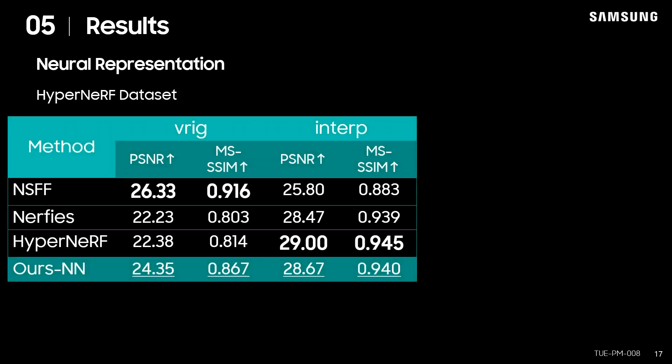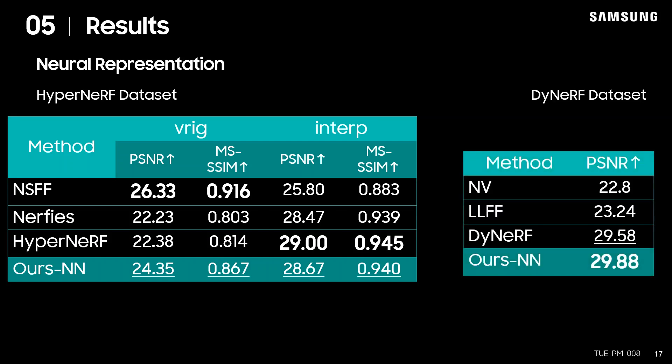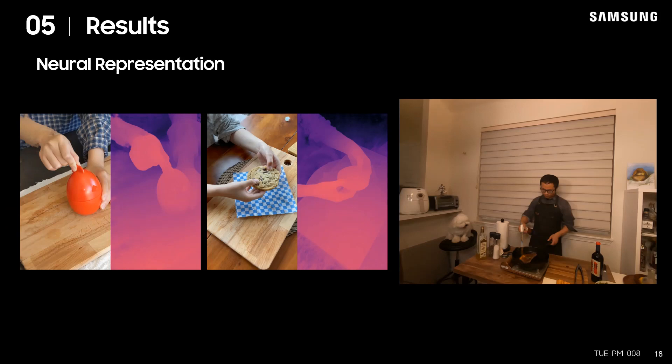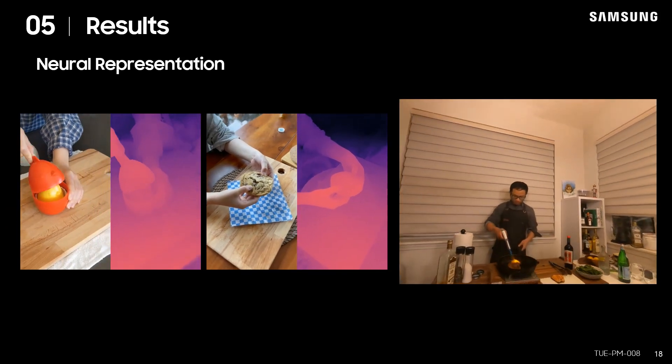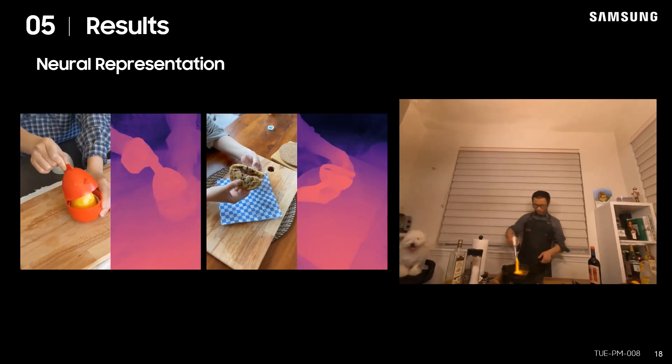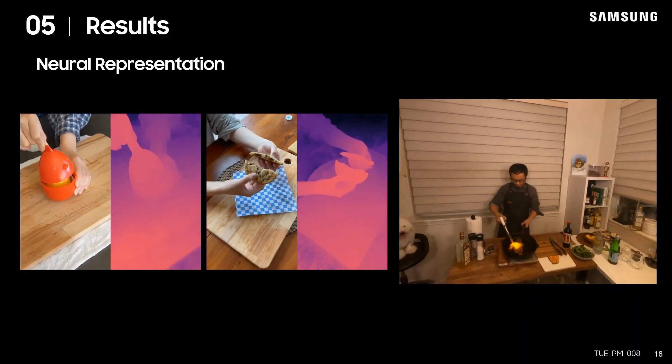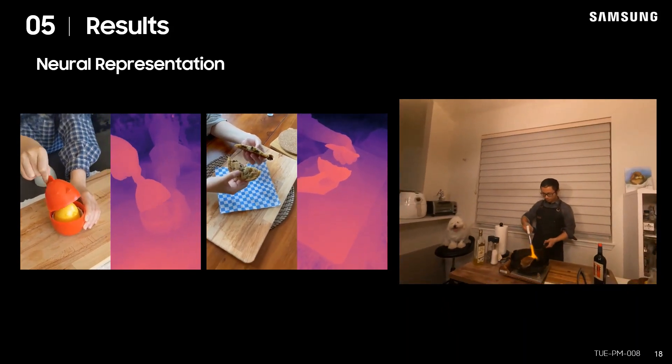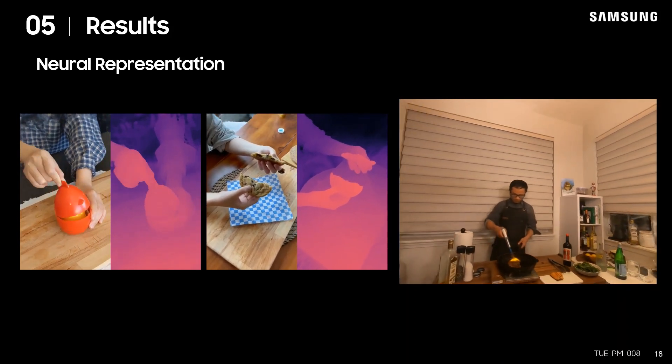Our method also achieved competitive performance on HyperNeRF and D-NeRF datasets. It is worth noting that our method also works well on the interpolation task. Here are some qualitative results of our neural representation models. Our method estimates correct depth and RGB information on challenging scenes containing topologic variations or torch flames.